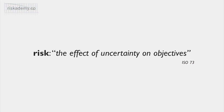ISO 73 defines risk as the effect of uncertainty on objectives. This is pretty simple as a definition, but the more I think about it the more I like it. It stresses that we're considering the effects of events, not the causes, and how these influence an entity's objectives rather than simply judging risk by the magnitude of an event. For example, flooding by itself isn't necessarily a risk — in fact some farmers rely on flooding to irrigate their crops — so we need to consider how floods might affect an organization's objectives to determine if this poses a risk or not.